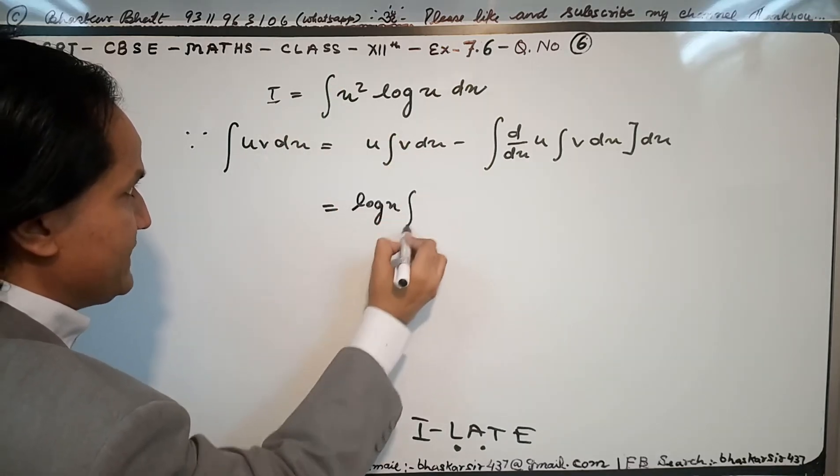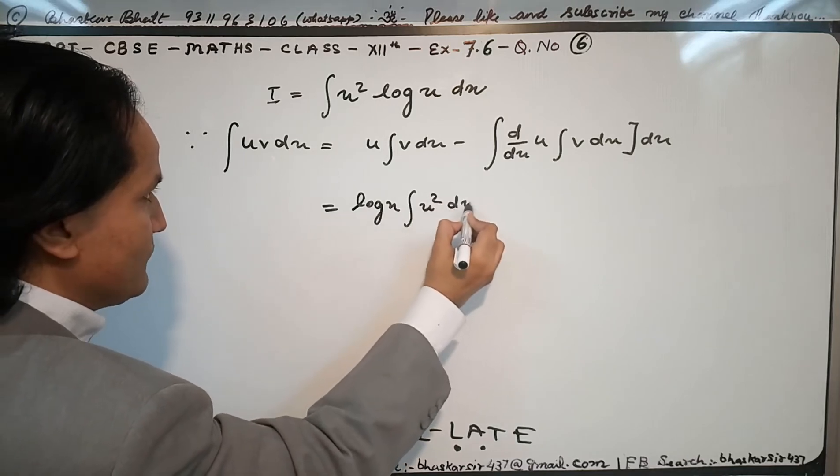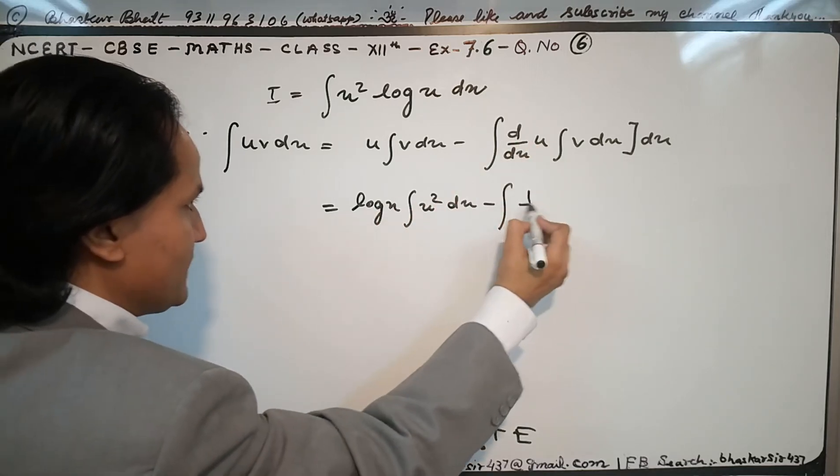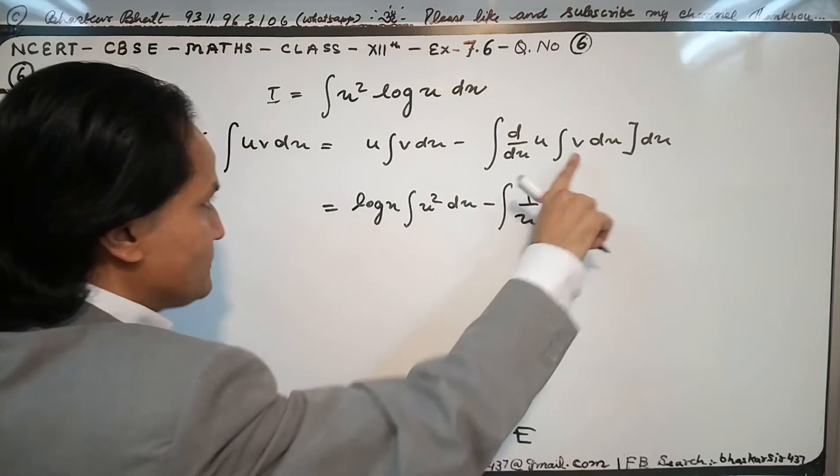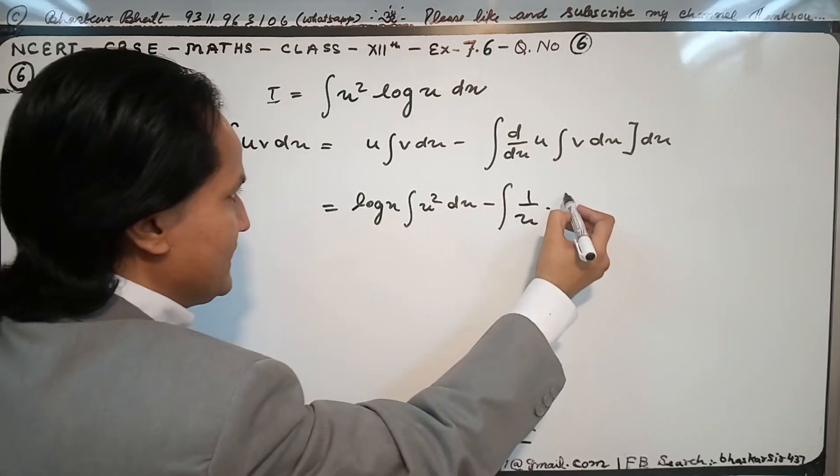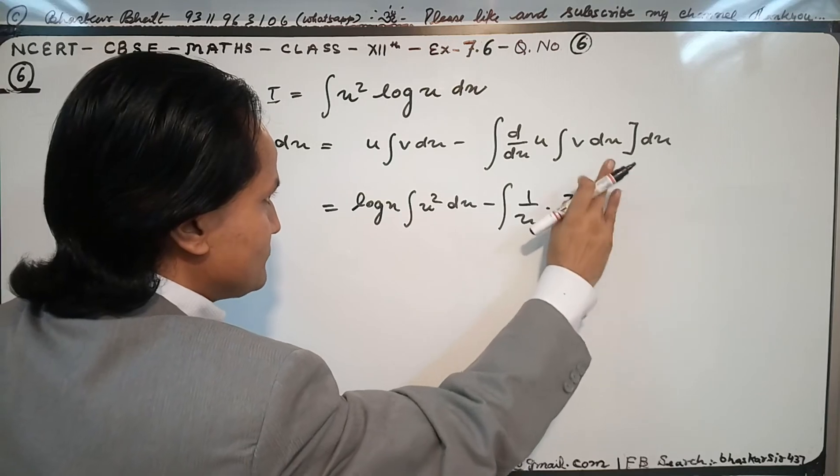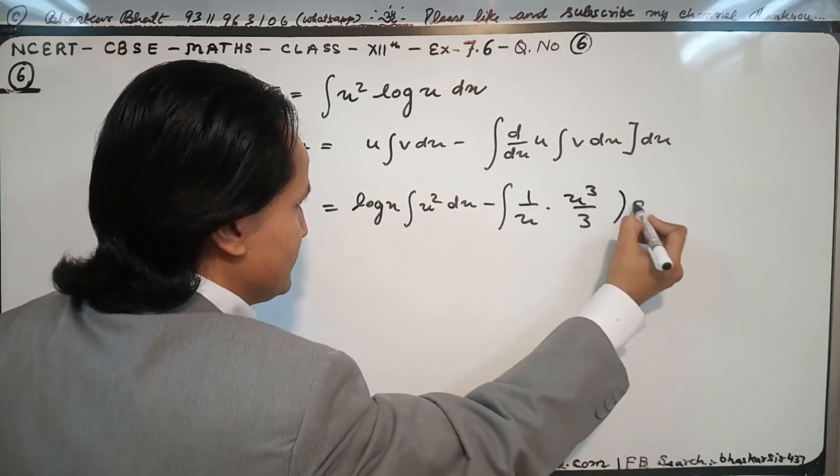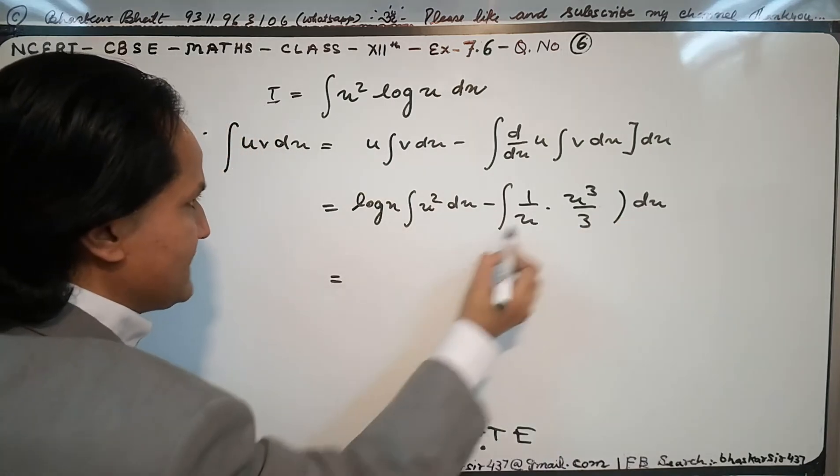Now, log x times integral of x square with respect to x, minus differentiation of first function log x, which is 1 upon x, and integral of second function x square, which is x cube upon 3, with respect to x. Cancelling x.